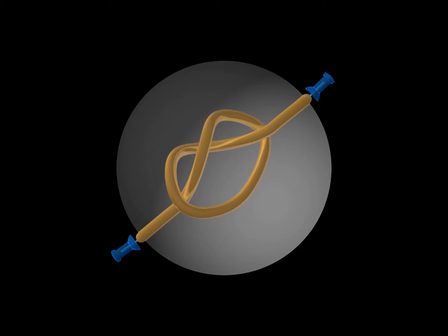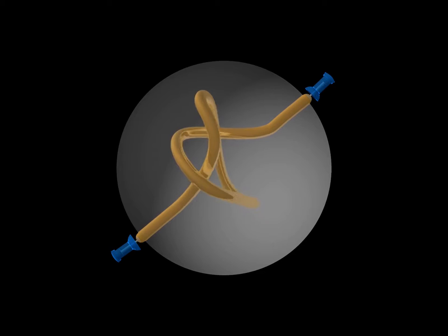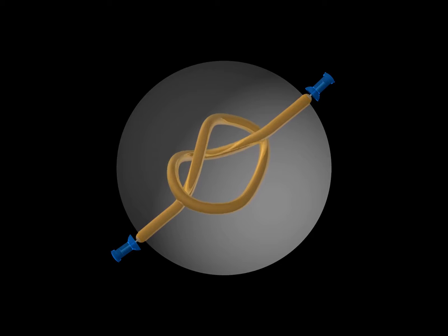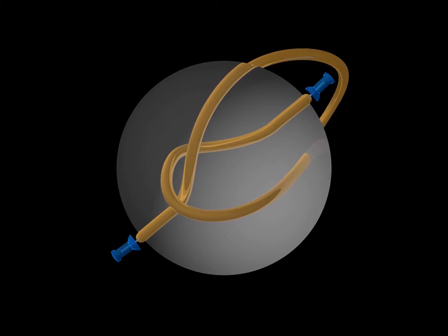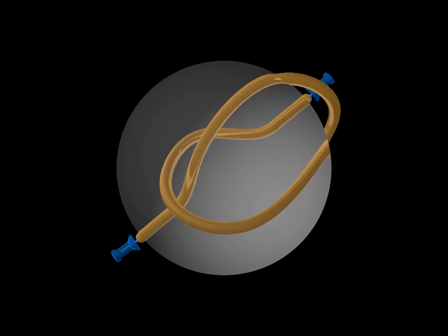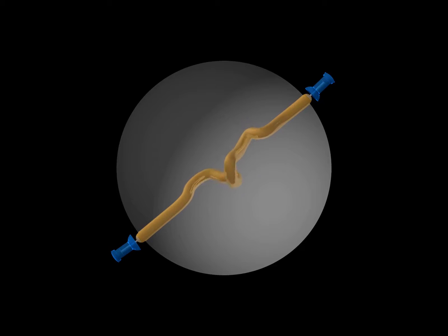We can move the string inside the ball without cutting it. The type of the knotting does not change. Yet no part of the string can ever escape the ball, otherwise we could untie every tangle. Every time we draw open strings in this movie we mean a tangle, even when we do not draw the ball in which it is contained.